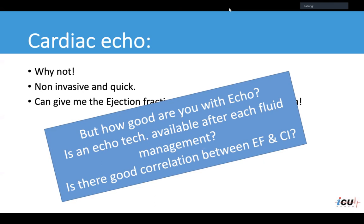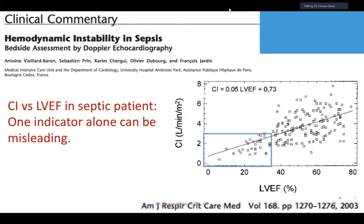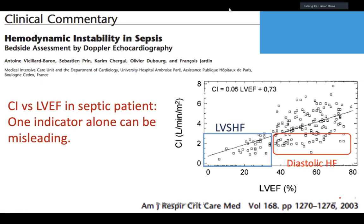We must ask whether there is a good correlation between ejection fraction and cardiac index. Some patients have a high ejection fraction — above 35 or even 40 — but their cardiac index is still below 3, meaning they have a cardiogenic element to their shock state. This is a constant debate between intensivists and cardiologists and must be kept in mind when using echo in ICU.